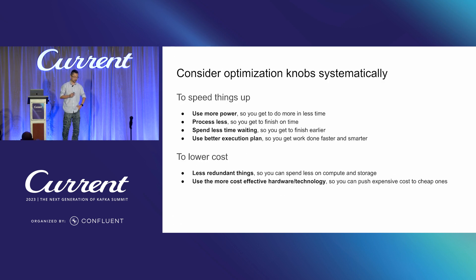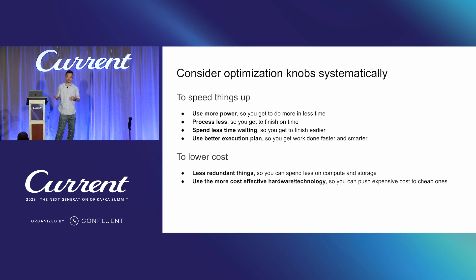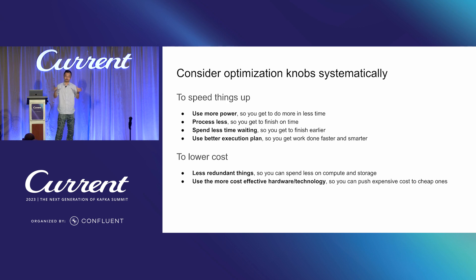I want to talk about how to systematically think about performing optimizations. Two things people care about are: how do we speed things up, and how do we lower the cost? But I also want to address correctness. Correctness is almost a given — for large scale systems we're talking about fault tolerance, resilience, and exactly-once processing. But there's also a subjective dimension: for fraud detection, correctness needs to be accurate within the bounds of maybe one minute of the transaction happening. If it's an hour later, it's probably less important.